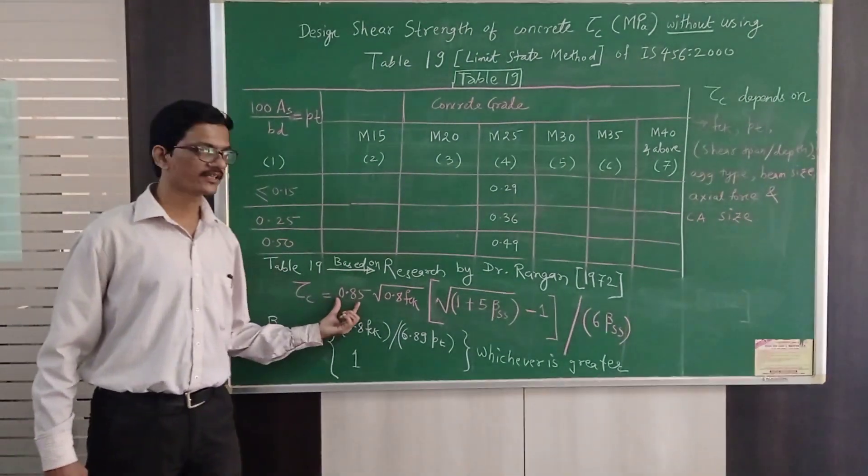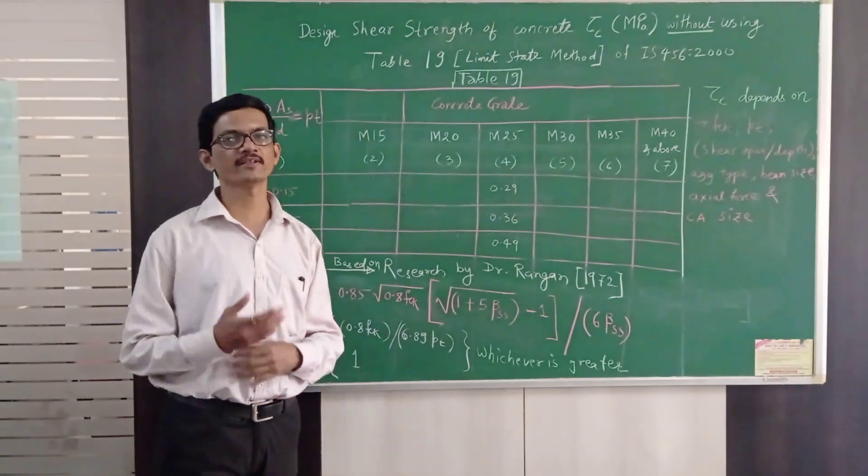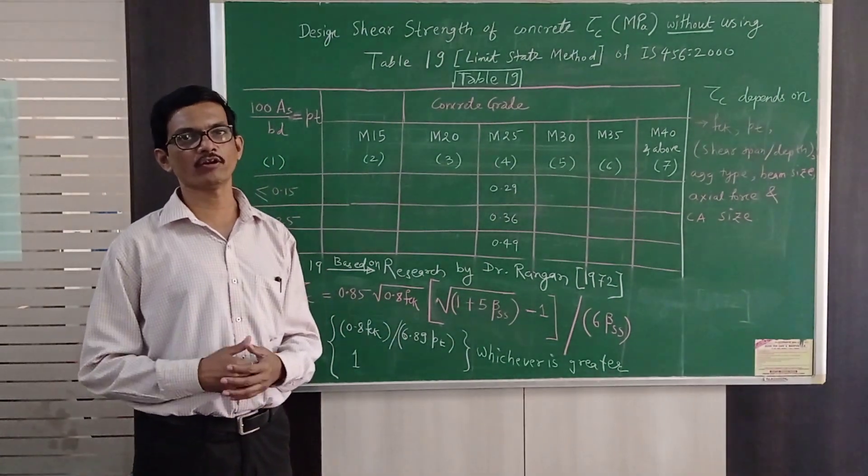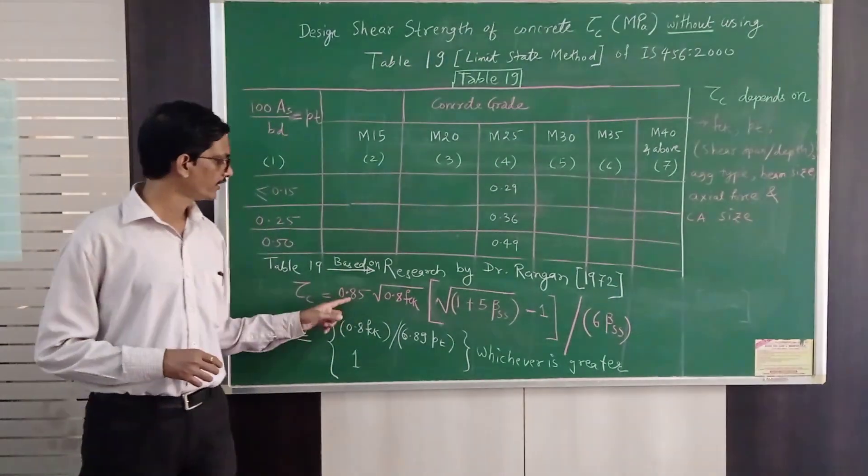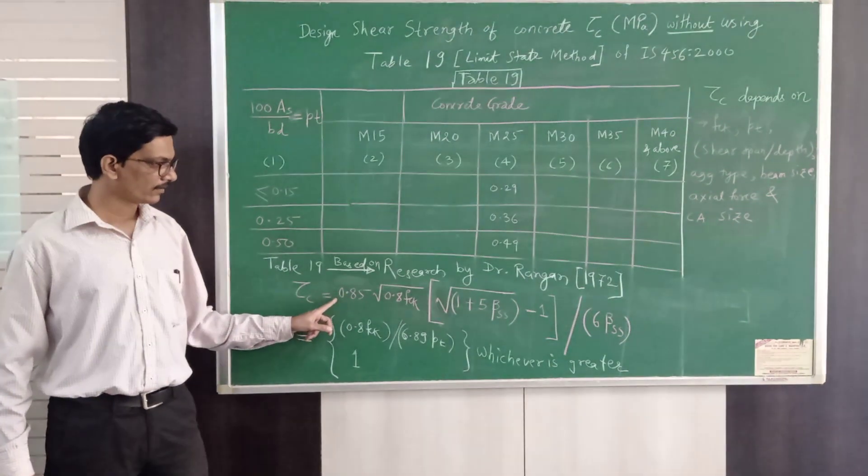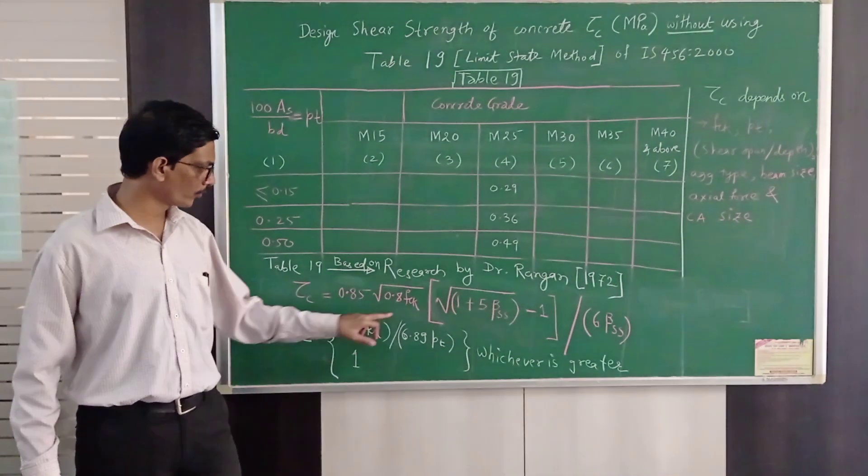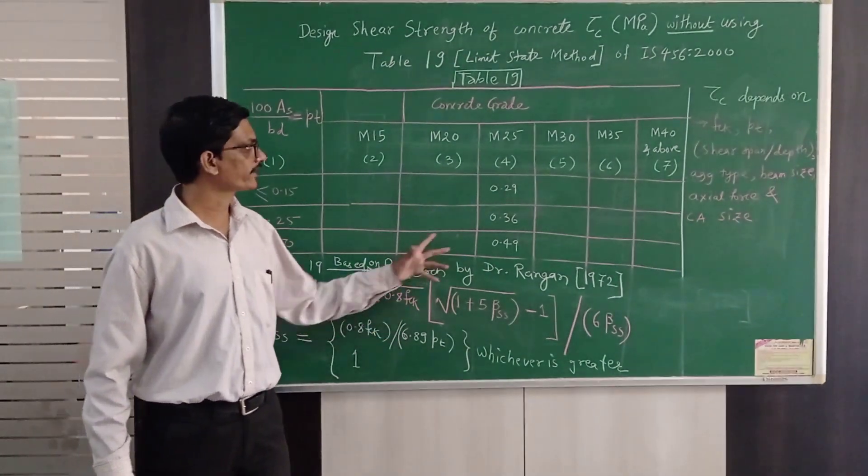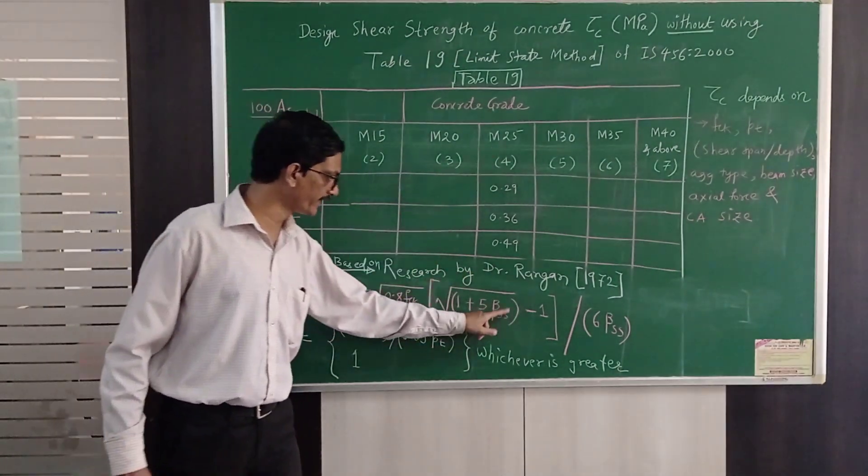That means there is a difference in quality control between site concrete and the laboratory concrete and therefore they say that apply one reduction factor of 0.85. Now here we know fck for example suppose M25 but we do not know beta ss.